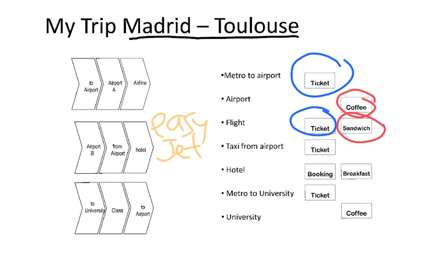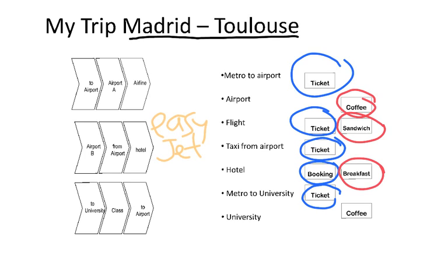In Toulouse, to go from the airport to my hotel I took a taxi, and when we arrived I asked for a receipt. I had booked my hotel in advance online, but because it was quite cheap it didn't include breakfast — they asked if I wanted breakfast at a separate price. Next morning I went to the university by metro, and I also arrived early and had time for a coffee.